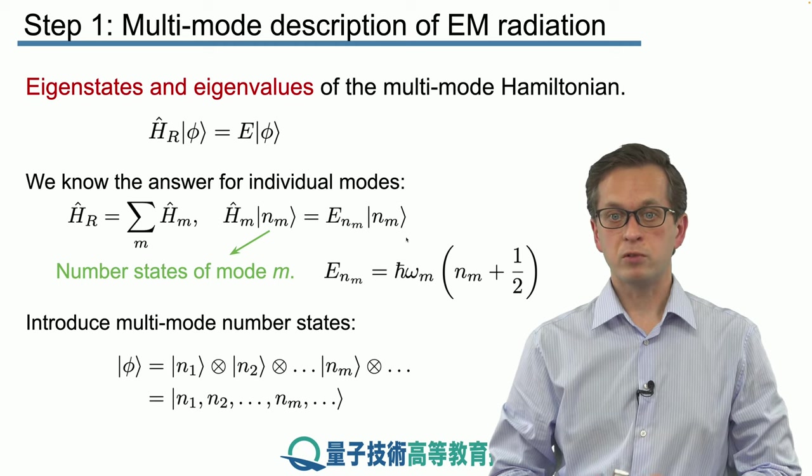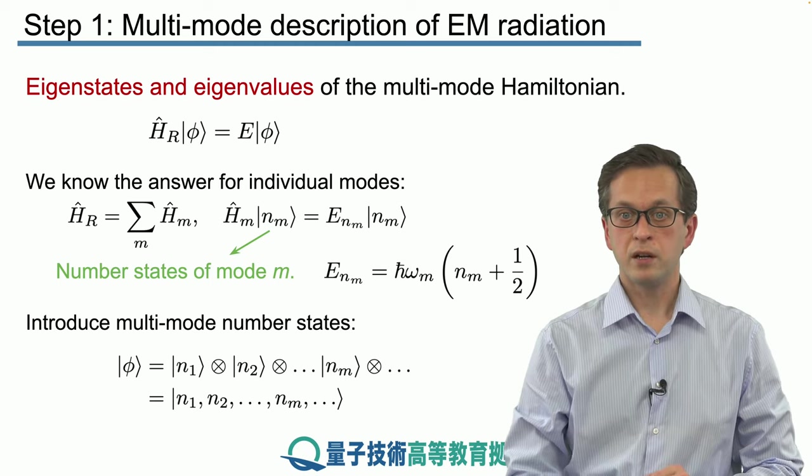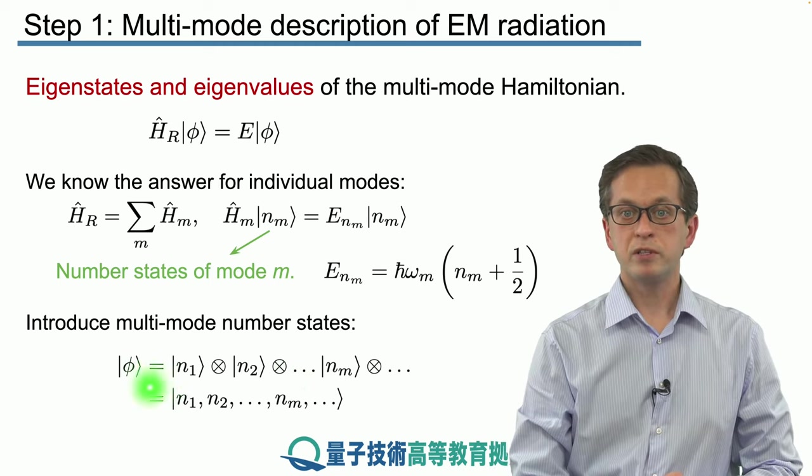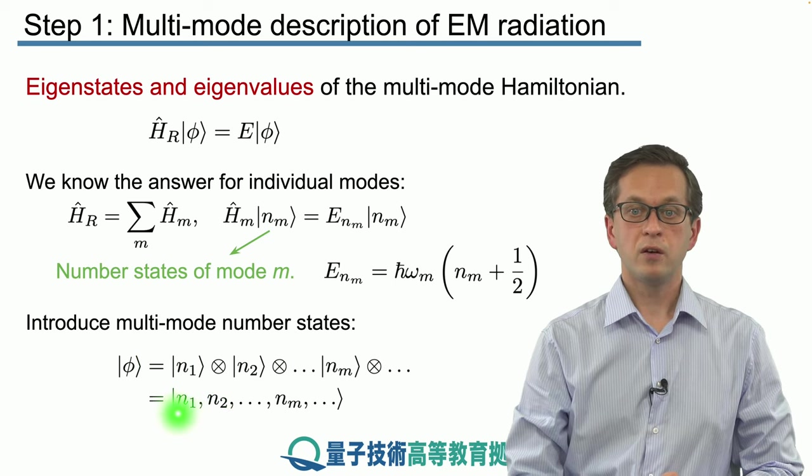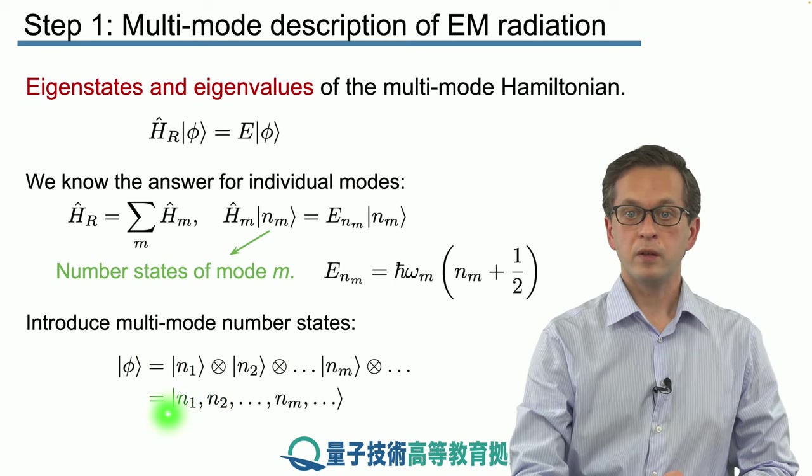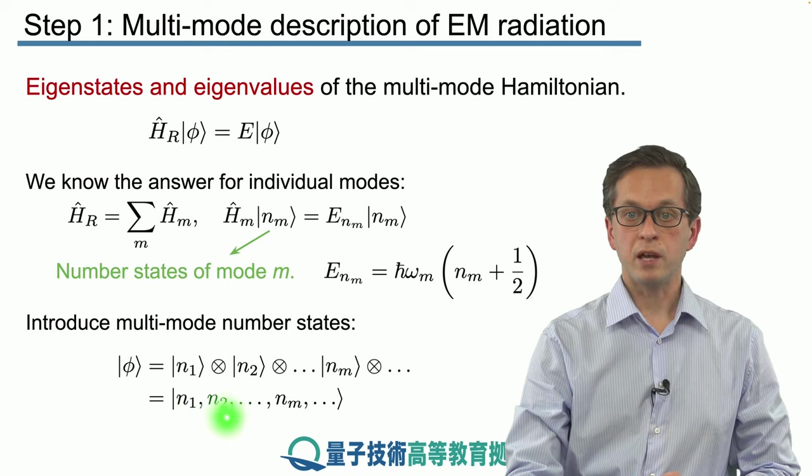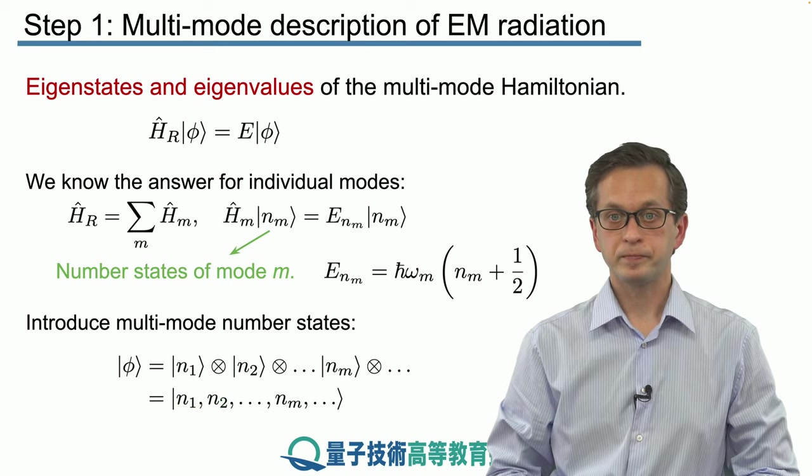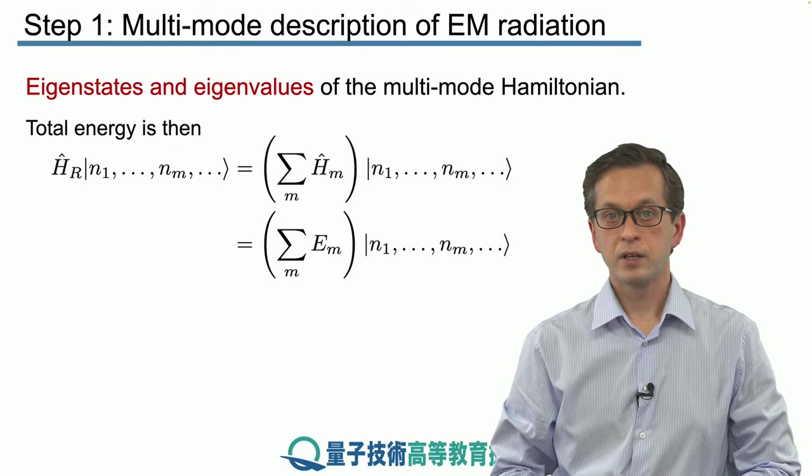This notation is a little bit too long, so normally we omit the tensor product symbols and we simply write it as one ket, where we put a comma in between this n1 and n2, and so on and so forth.